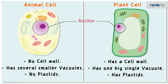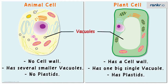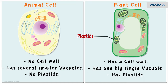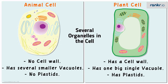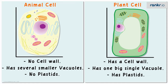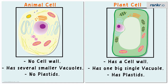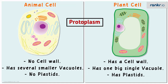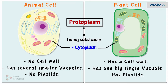Apart from the nucleus, vacuoles, and plastids, there are several other organelles in the cell — you will study them in our other videos. The entire content of a living cell is called protoplasm. Protoplasm is the living substance of the cell and it includes the cytoplasm and the nucleus.